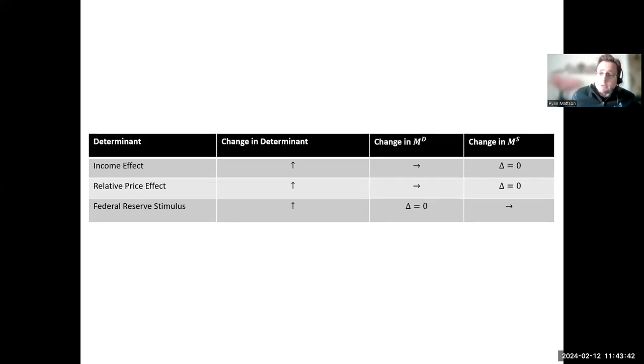Let's talk about what shifts money markets because we want to think about them together, separate, but they move in different ways. There's an income effect: income goes up, demand for money goes up because if you're wealthier, you want to buy more stuff. To buy more stuff, you have to hold more money. This doesn't change money supply. There's a relative price effect: if it becomes relatively more expensive to hold bonds, then money demand is going to go up. If it becomes more expensive to hold other stuff, then you want to hold money. Federal Reserve stimulus does not affect money demand, but it does affect the money supply. Those are the three things that will shift money supply or demand curve.